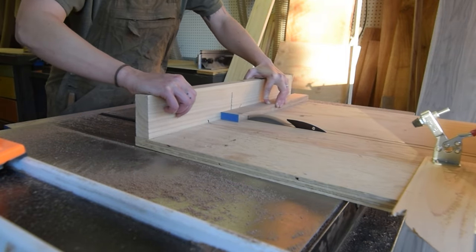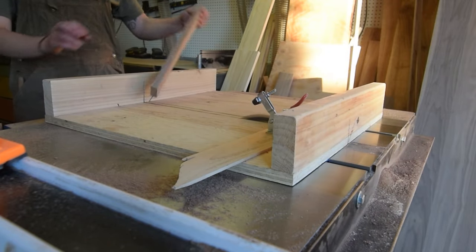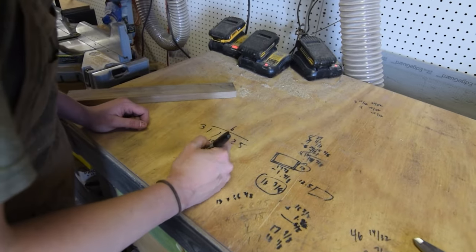With those pieces done, I could pull and execute the exact dimensions for the skirt that would connect the two legs as well as support the bench top. Then after a little workbench math, I marked and cut the tenons into either side of the skirt piece.